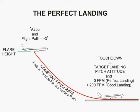From a stabilized approach, a perfect landing passes over the runway threshold at a safe altitude, and transitions to the desired touchdown pitch attitude in the minimum distance, followed by a zero foot per minute rate of descent when the wheels touch.